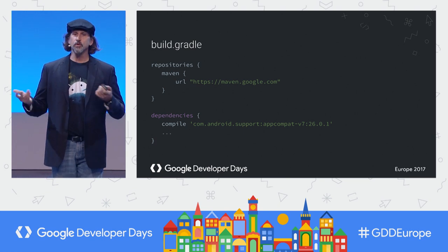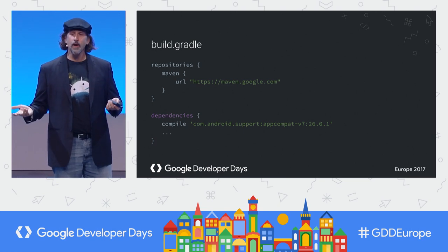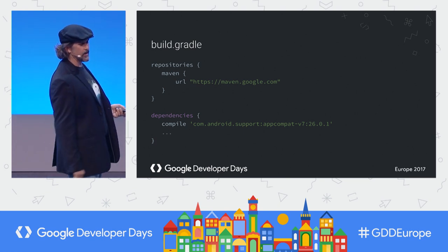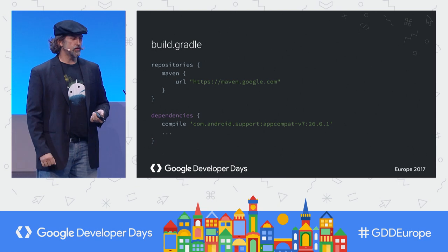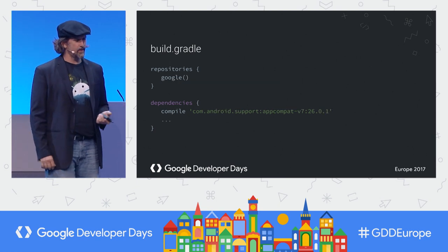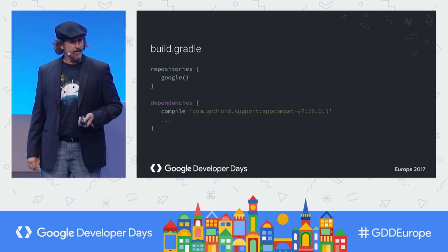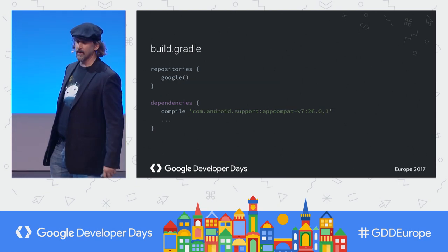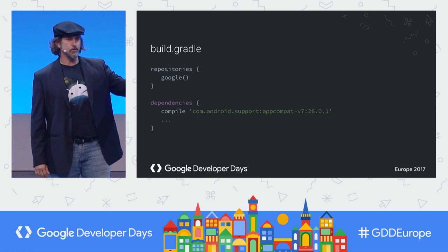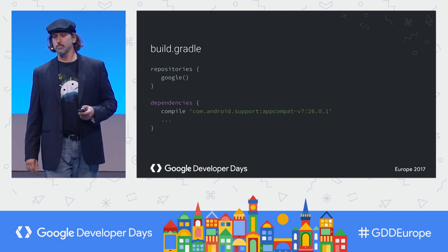We're using the Google Maven repository, which you can specify in your build Gradle. This is on Android Studio 2.3. If you're using 3.0 plugins, you can actually just say Google, which is kind of sweet.